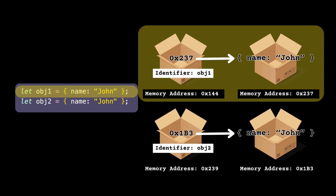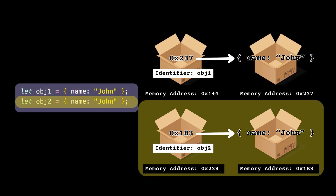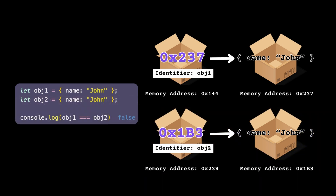You can test this reference nature using this code. I've created const obj1 with property name: 'john', and obj2 with the same property and value. These two objects are stored at separate memory locations, and obj1 and obj2 each store the respective memory addresses of their values. When you compare two object variables, the memory addresses or references are compared, not the values. So obj1 === obj2 prints false because they store separate references.